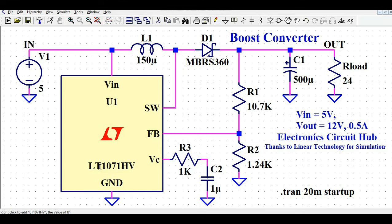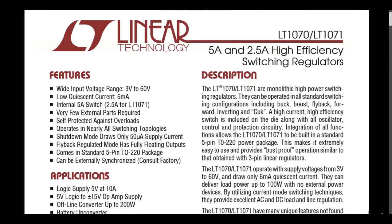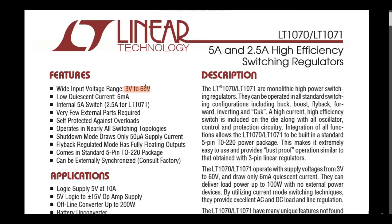Let's look at the datasheet of the LT1071HV. It is a 5-ampere and 2.5-ampere high-efficiency switching regulator. Key features include a wide input voltage range of 3V to 60V — so you can boost from as low as 3V input. The quiescent current is 6 amperes and the internal switch is 5 amperes for the LT1071.